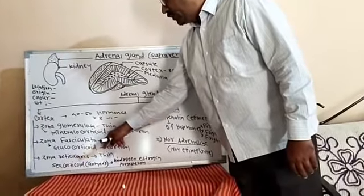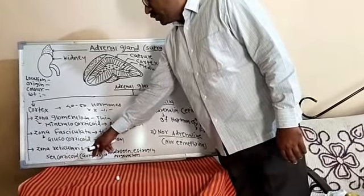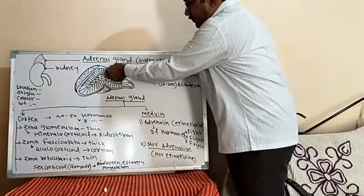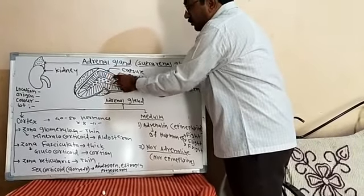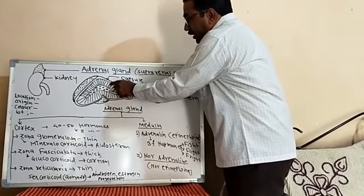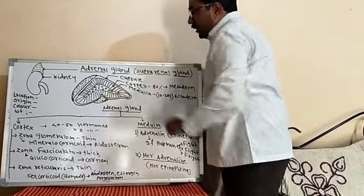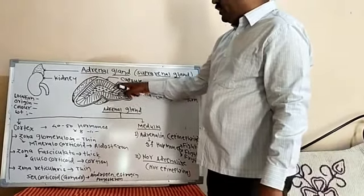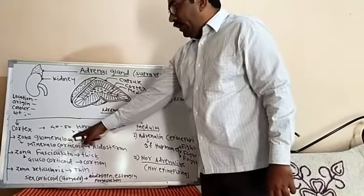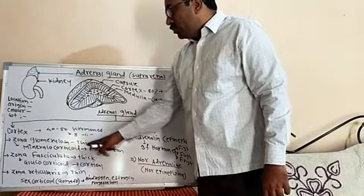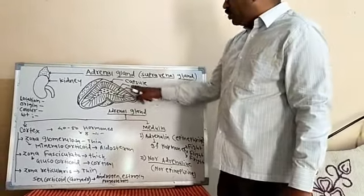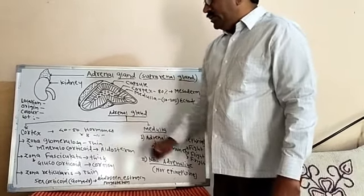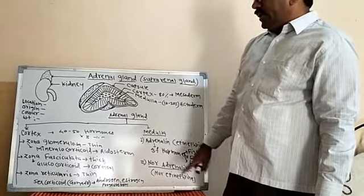The outer region is called zona glomerulosa, the middle region is called zona fasciculata, and the innermost region is called zona reticularis. The zona glomerulosa is the outermost part of the cortex. It is thin and secretes a main type of hormone known as mineralocorticoid.